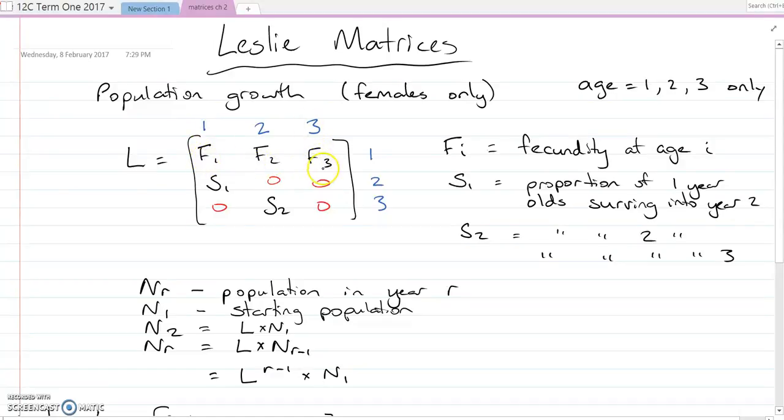So F3 is the number of offspring that a three-year-old female produces, the number of female offspring. We're only interested in females in these examples because they're the only ones that can bear female babies for the next generation.